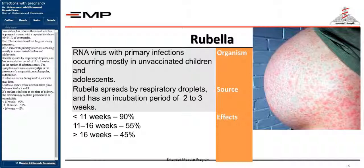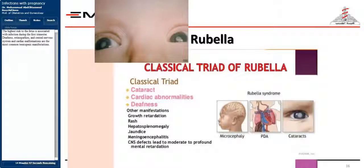In the mother, if infection occurs, the symptoms are malaise and myalgia with a non-pruritic maculopapular reddish rash. If infection occurs during week 6, cataracts may form. Deafness occurs when infection takes place between weeks 7 and 8. If a mother is infected at the time of delivery, the newborn may contract pneumonitis or encephalitis. The risk of fetal infection at 16 weeks is around 45–55%. The highest risk to the fetus is associated with infection during the first trimester. Deafness, retinopathies, and central nervous system and cardiac malformations are the most common teratogenic manifestations.